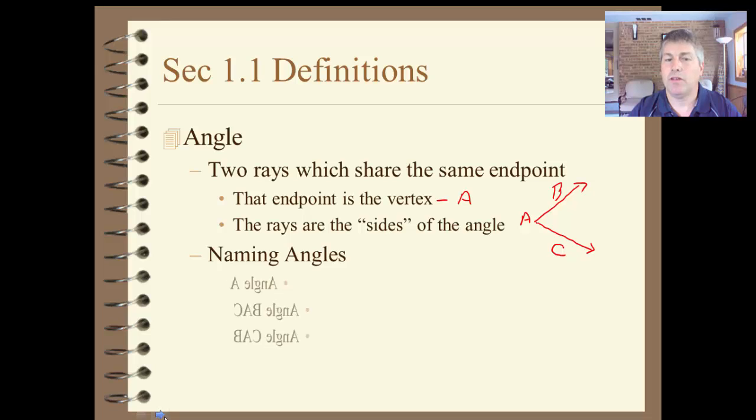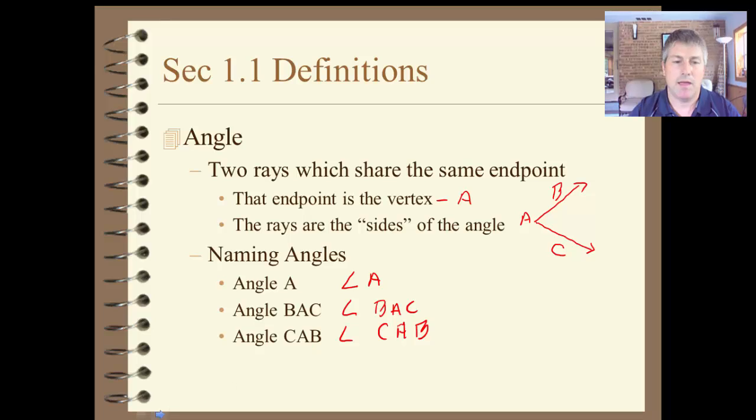We can name angles in a variety of ways. In this particular one we could call this angle A. Or in our notation, angle A. Or we can use two of the points on the rays and our vertex. And the vertex always goes in the middle. So that would be angle BAC or angle CAB. All three different names for that same angle.